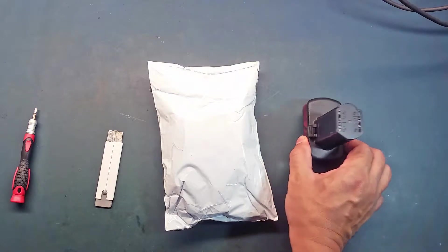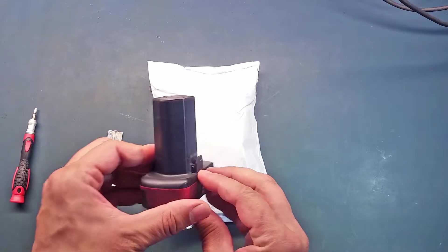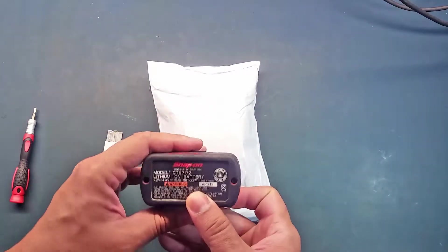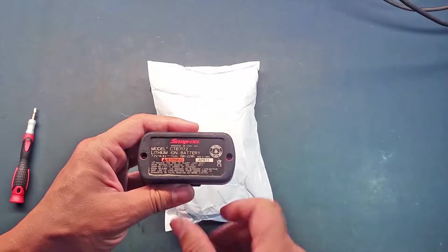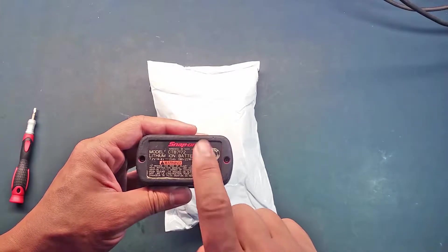We are replacing the enclosure because the tabs that hold the battery in the tools broke due to usage and fatigue. As you can see here, this is a model CTB7172 Lithium battery, and this is the battery we will take apart and replace.